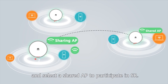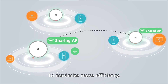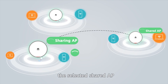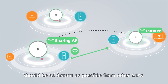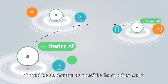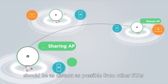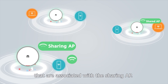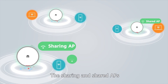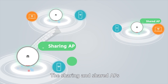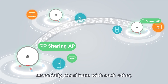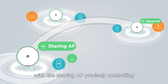To maximize reuse efficiency, the selected shared AP should be as distant as possible from other stations that are associated with the sharing AP. The sharing and shared APs essentially coordinate with each other.